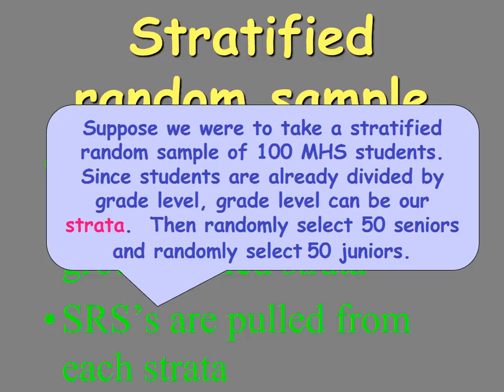So if we want to take a stratified random sample of 100 MHS students divided by grade level, we can randomly select 50 seniors and 50 juniors for an upperclassmen survey. If we want a whole school survey, we would randomly select 25 students from each grade to get our 100-student sample.